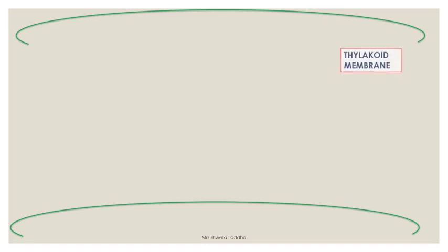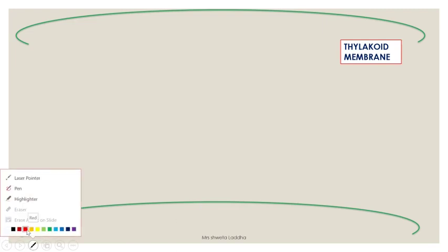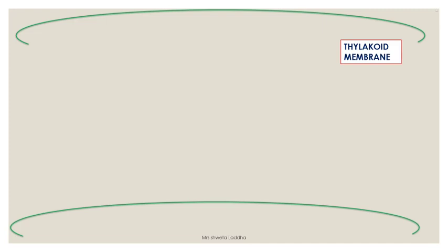Let us understand the mechanism. If you look at this structure, this is the wall of the thylakoid membrane — the phospholipid bilayer. This entire region from here to here is the thylakoid membrane. The inner part present inside the thylakoid membrane is the lumen of the thylakoid. In non-cyclic photophosphorylation, reactions are taking place on the thylakoid membrane, in the photosystems, as well as in the lumen of the thylakoid.